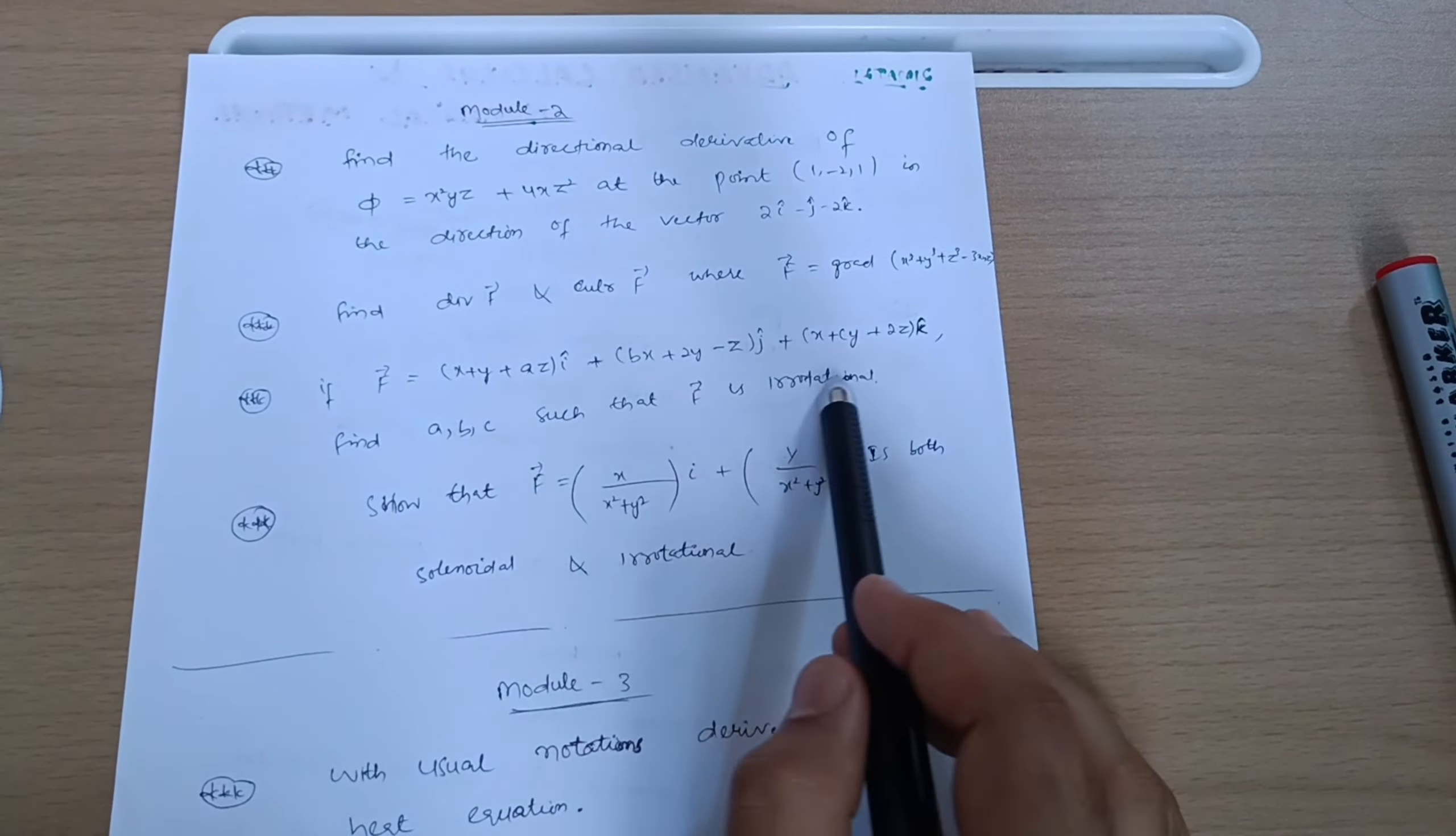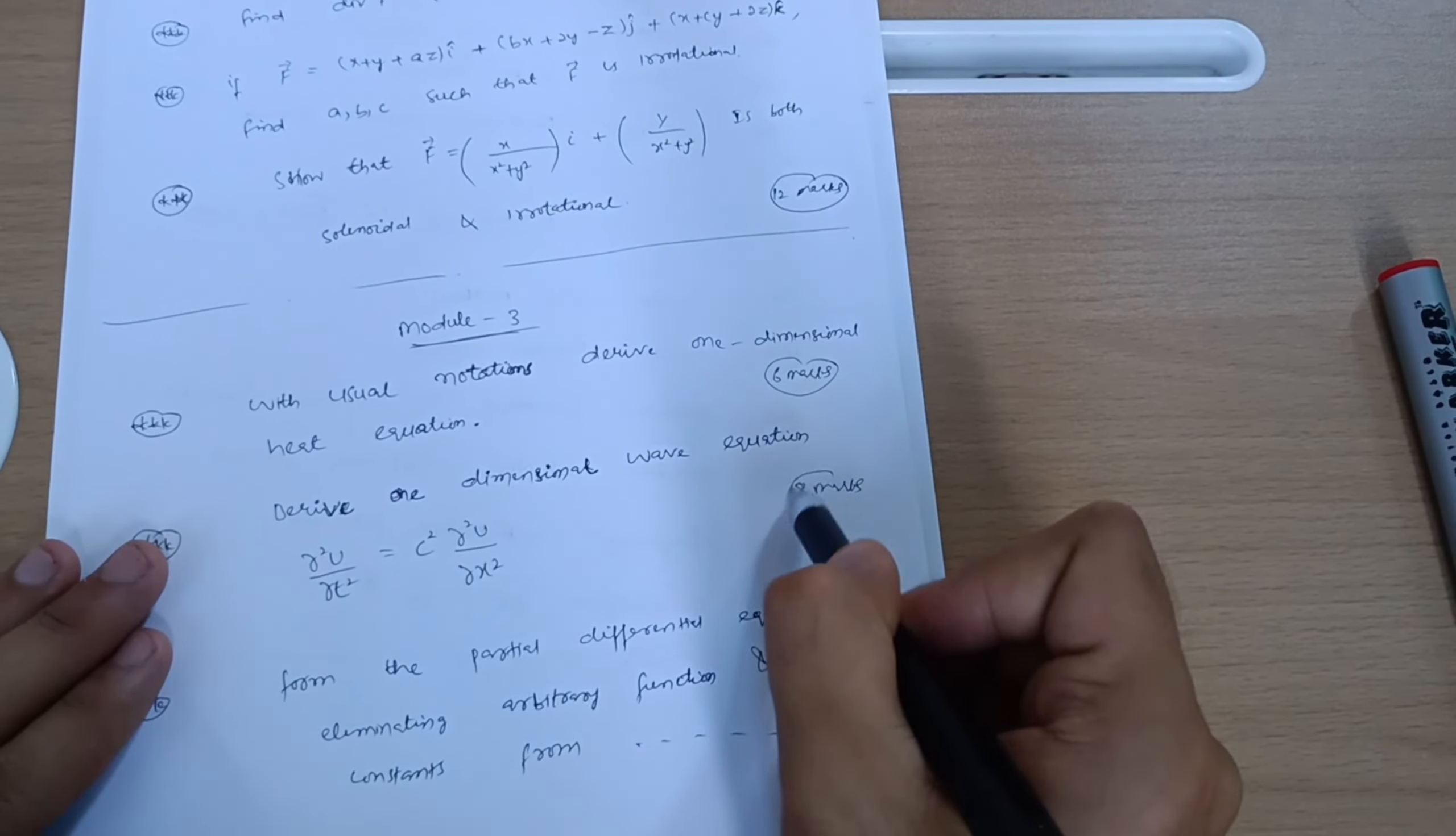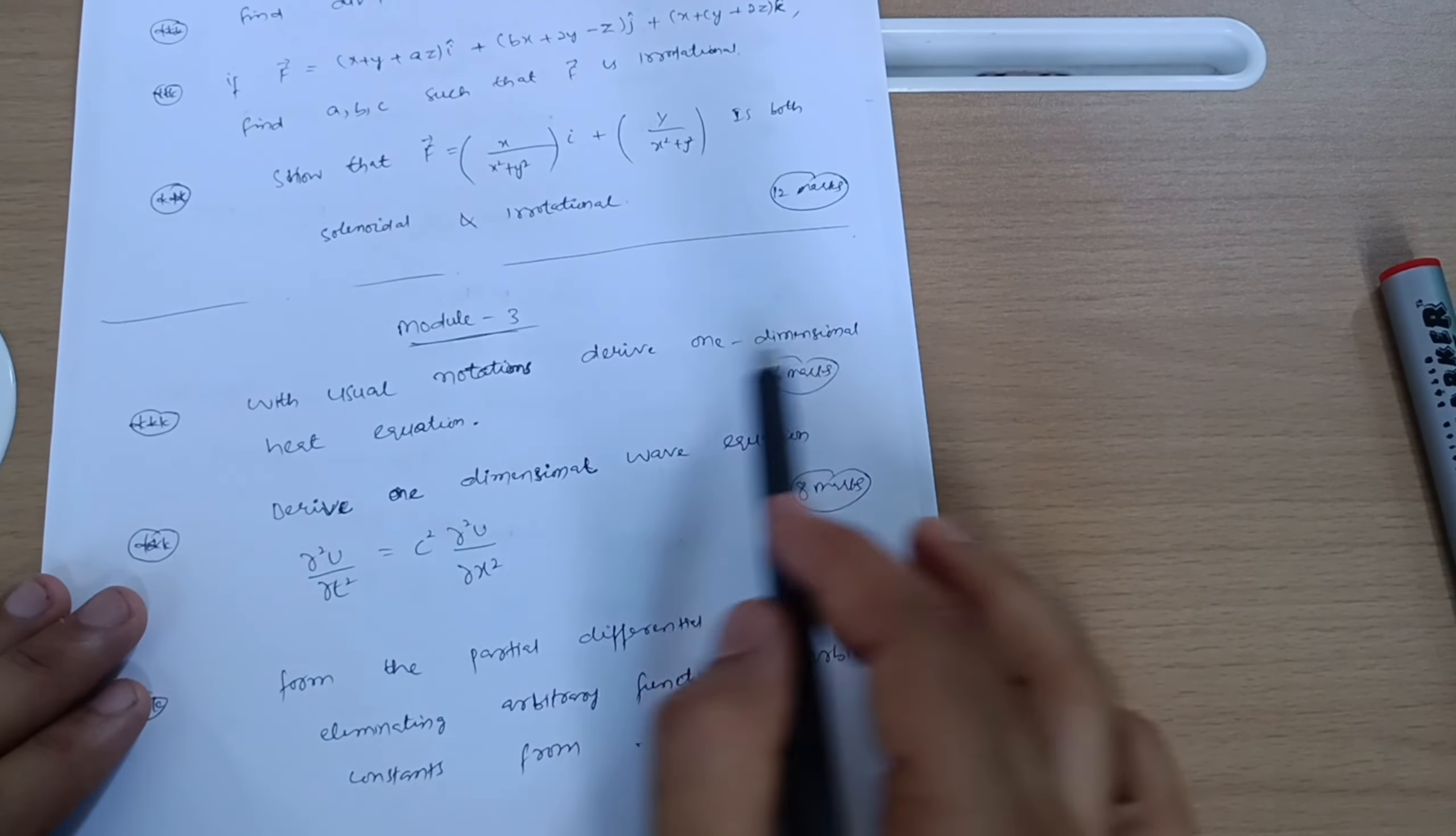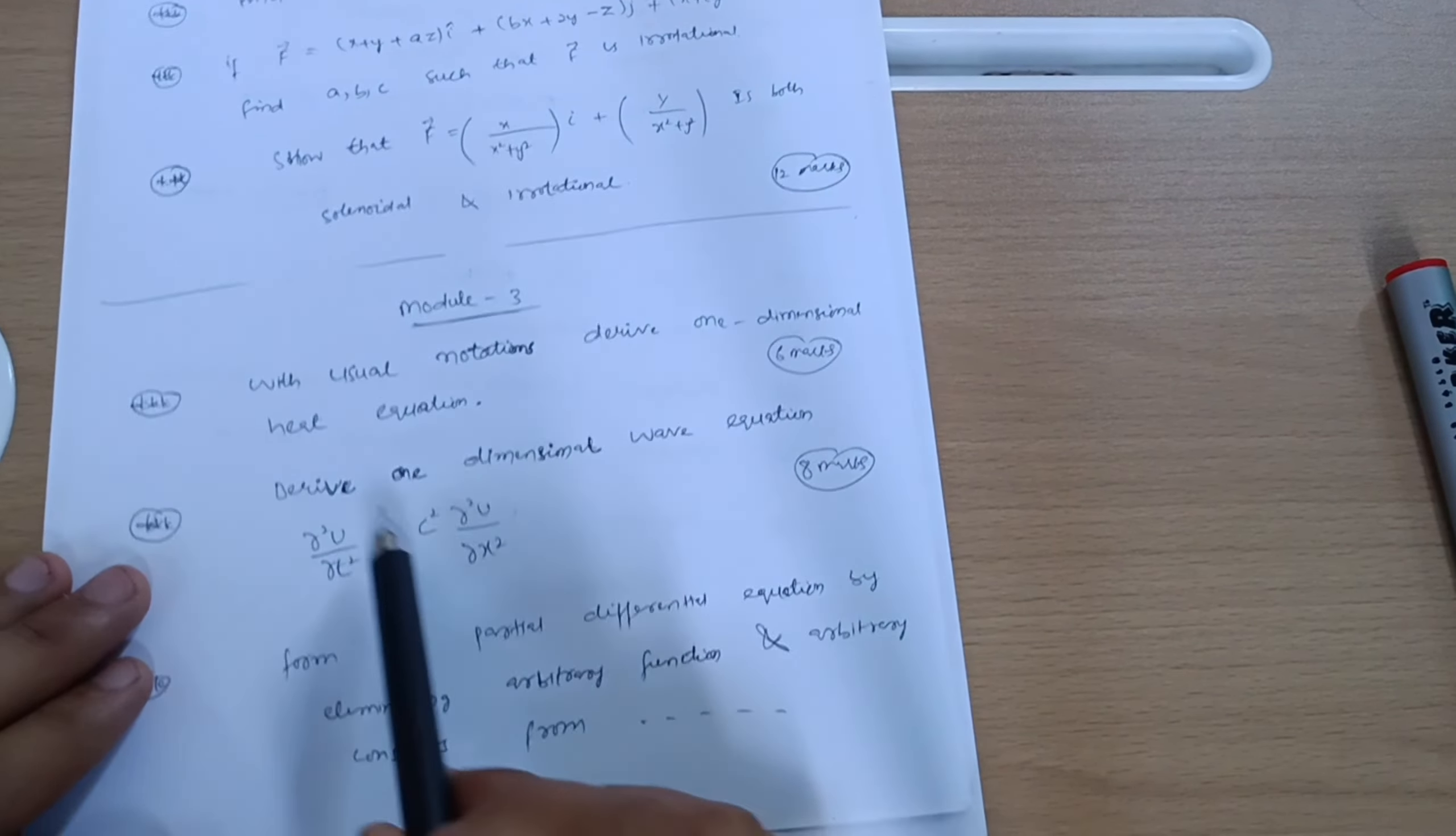Now let's come to the module four, in which you have to cover Regula Falsi method, Newton-Raphson method, Newton forward and backward formula, Newton's divided difference formula, Lagrange's interpolation formula, and Simpson one-third and three by eight rule. If you are not able to cover these Simpson one-third, no need to worry. At least you can get 15 marks by covering this much portion.